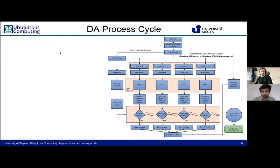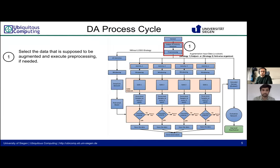Before going into the details of our methodology, we would like to briefly introduce our data augmentation process cycle. Our idea was to develop a process flow that allows the individual steps required to perform data augmentation to be easily understood and executable. The process is divisible into four steps. First, choose the data, subject, and activities you want to augment and execute necessary preprocessing. It is important that since the GAN will try to imitate the input data, normalization should not be applied yet — we need to feed our GANs with non-normalized data to synthesize real-appearing data.